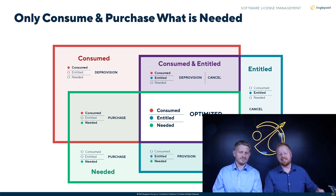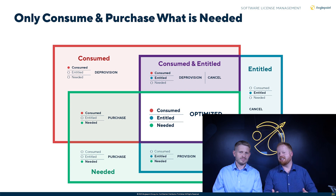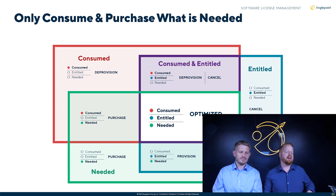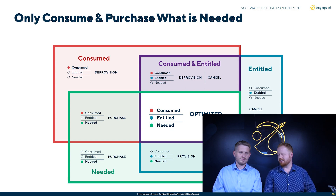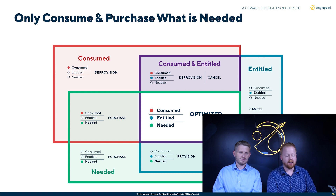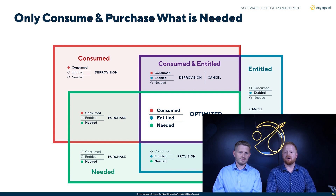It's really easy to consume software. License keys get spread around, or someone is added to an Active Directory group that allows them to download software they otherwise shouldn't be able to. The point is that they don't line up perfectly, and they almost never do. The goal is to overlap as closely as possible. You can see there's software being consumed that we're not entitled to use, and software we're entitled to use that we're not actually consuming — in other words, it's sitting on the shelf as surplus.